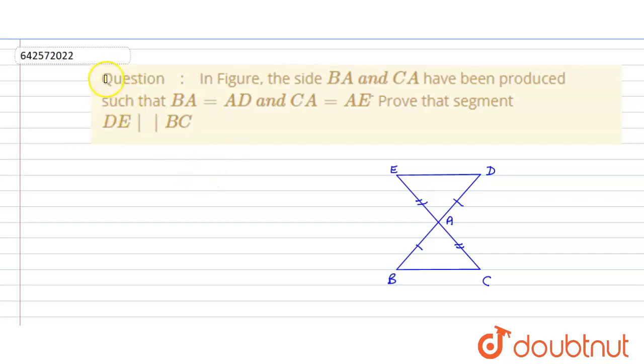Question given: In the figure, the sides BA and CA have been produced such that BA equals AD and CA equals AE. Prove that segment DE is parallel to BC.